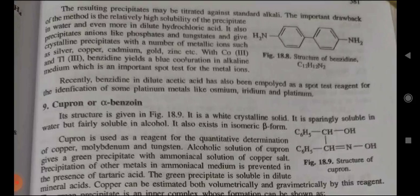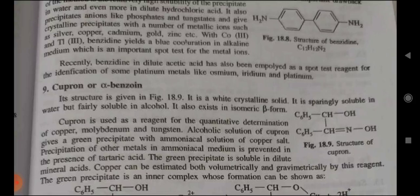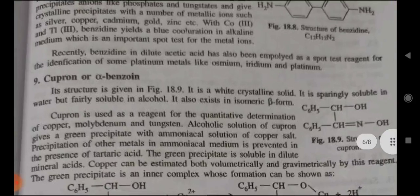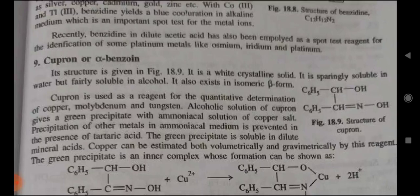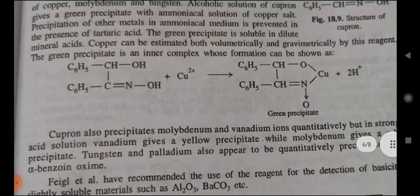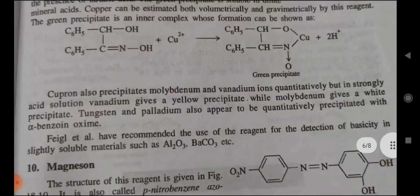Ninth — Cuproine (alpha-benzoin oxime): its structure is given in figure 18.9. It is a white crystalline solid, sparingly soluble in water but fairly soluble in alcohol. It also exists in an alpha and beta form. Cuproine is used as a reagent for the quantitative determination of copper, molybdenum, and tungsten. Alcoholic solution of cuproine gives a green precipitate with ammoniacal solution of copper salts. Precipitation of other metals in ammoniacal medium is prevented in the presence of tartaric acid. The green precipitate is soluble in dilute mineral acid. Copper can be estimated both volumetrically and gravimetrically by this reagent. The green precipitate is an inner complex whose formation can be shown accordingly.